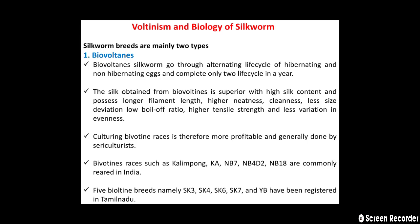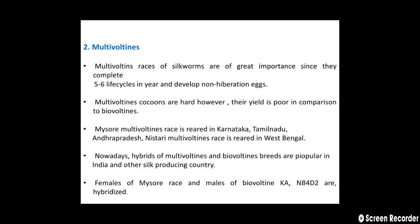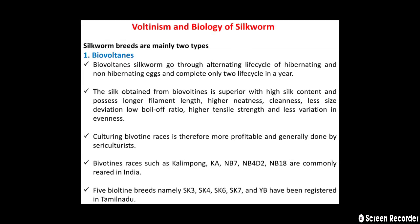Voltinism means the number of generations completed in a year. The silkworm breeds are mainly two types: the first one is bi-voltine and the second one is multi-voltine. So let us see one by one.